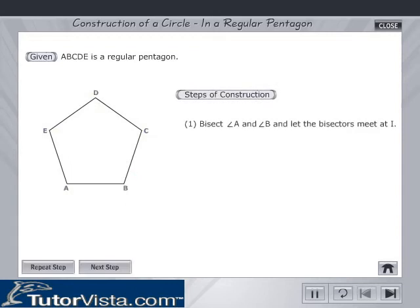Steps of construction: Bisect angle A and angle B and let the bisectors meet at I.